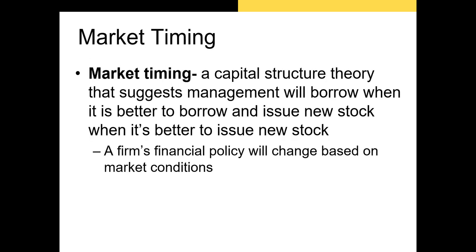The final theory in this lecture is market timing. Market timing suggests management will borrow when it's better to borrow and issue new stock when it's better to issue new stock. This means firms will issue new debt when interest rates are low and issue new equity when interest rates are high or market liquidity is low. This theory implies that the ideal capital structure will change based on market conditions. There is at least some empirical evidence to support this theory, as well as all of the other theories mentioned. Financial economists are still examining the factors that determine a firm's capital structure today.